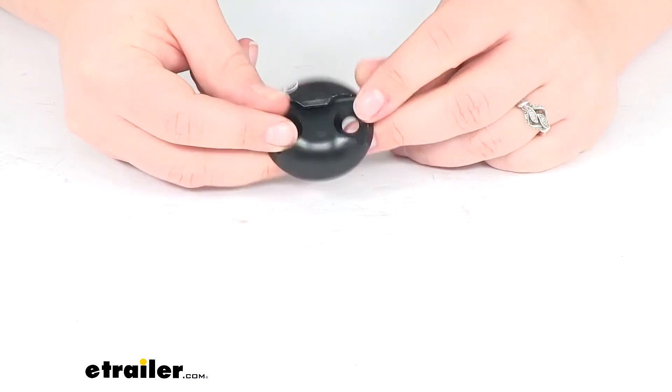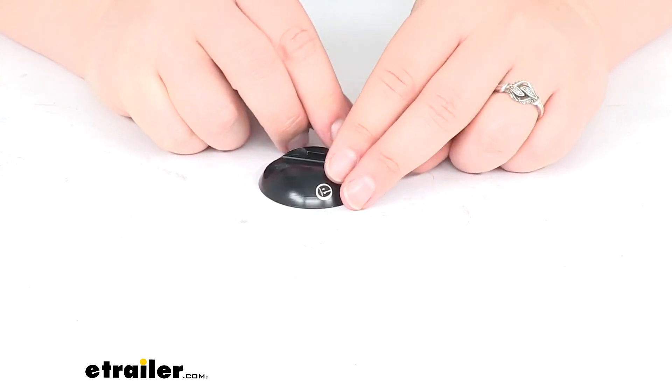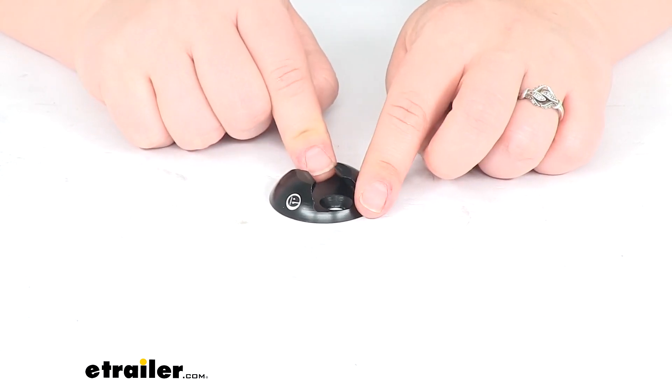So, all in all, really easy way to get a nice looking attachment point just about anywhere you need it to be. That's going to do it for our look at the Torax L-Track.